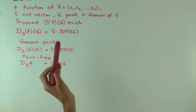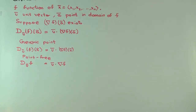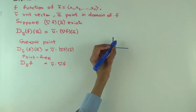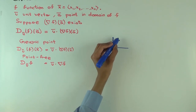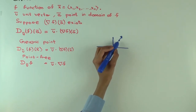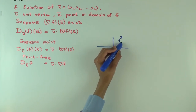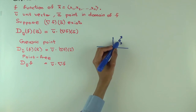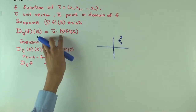Let's assume we are in two dimensions to make the picture easier. If the gradient vector of f at a point is in a certain direction, and we want to take the directional derivative along a direction perpendicular to that gradient, the directional derivative will be zero — because the dot product of perpendicular vectors is zero.